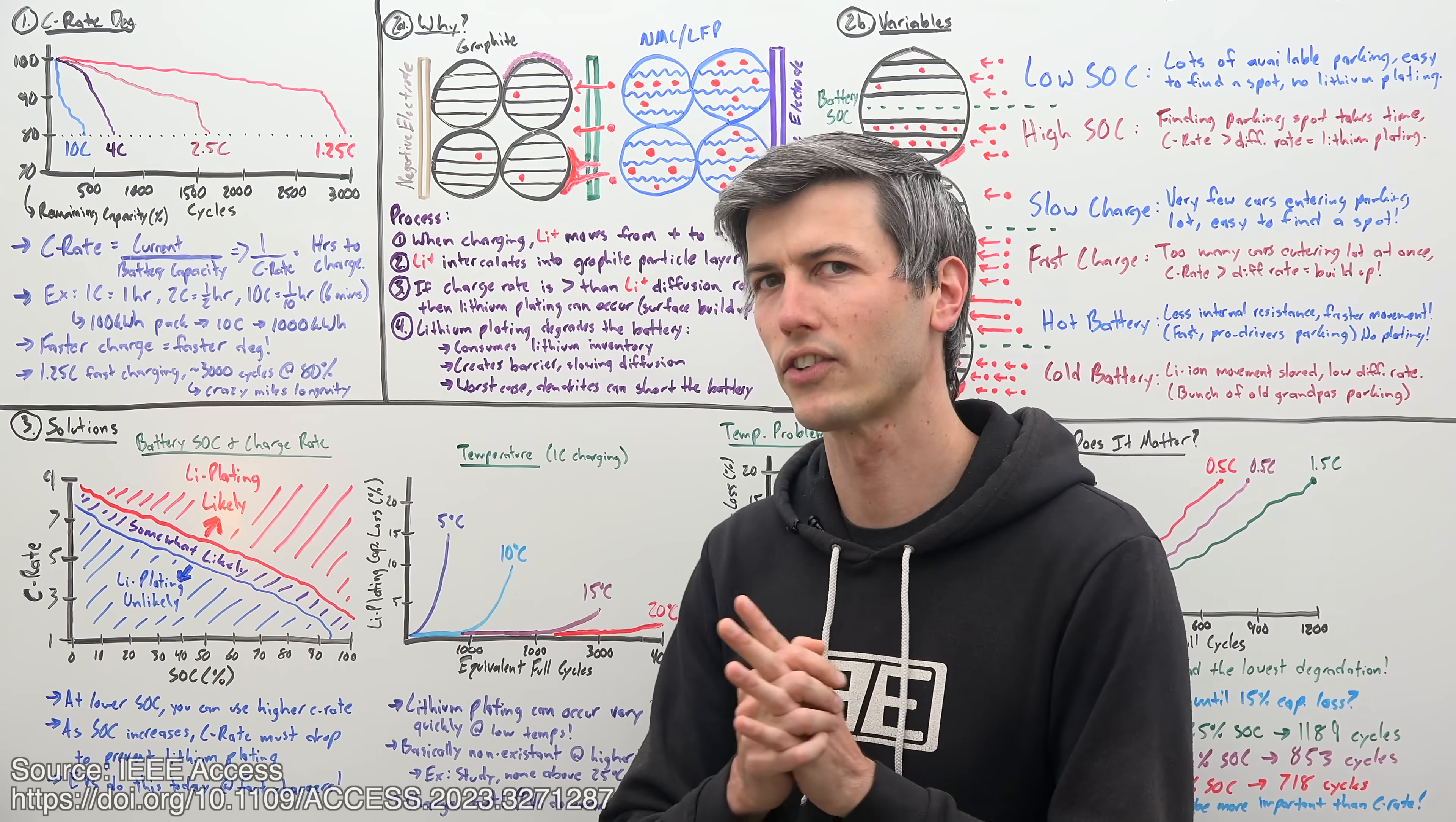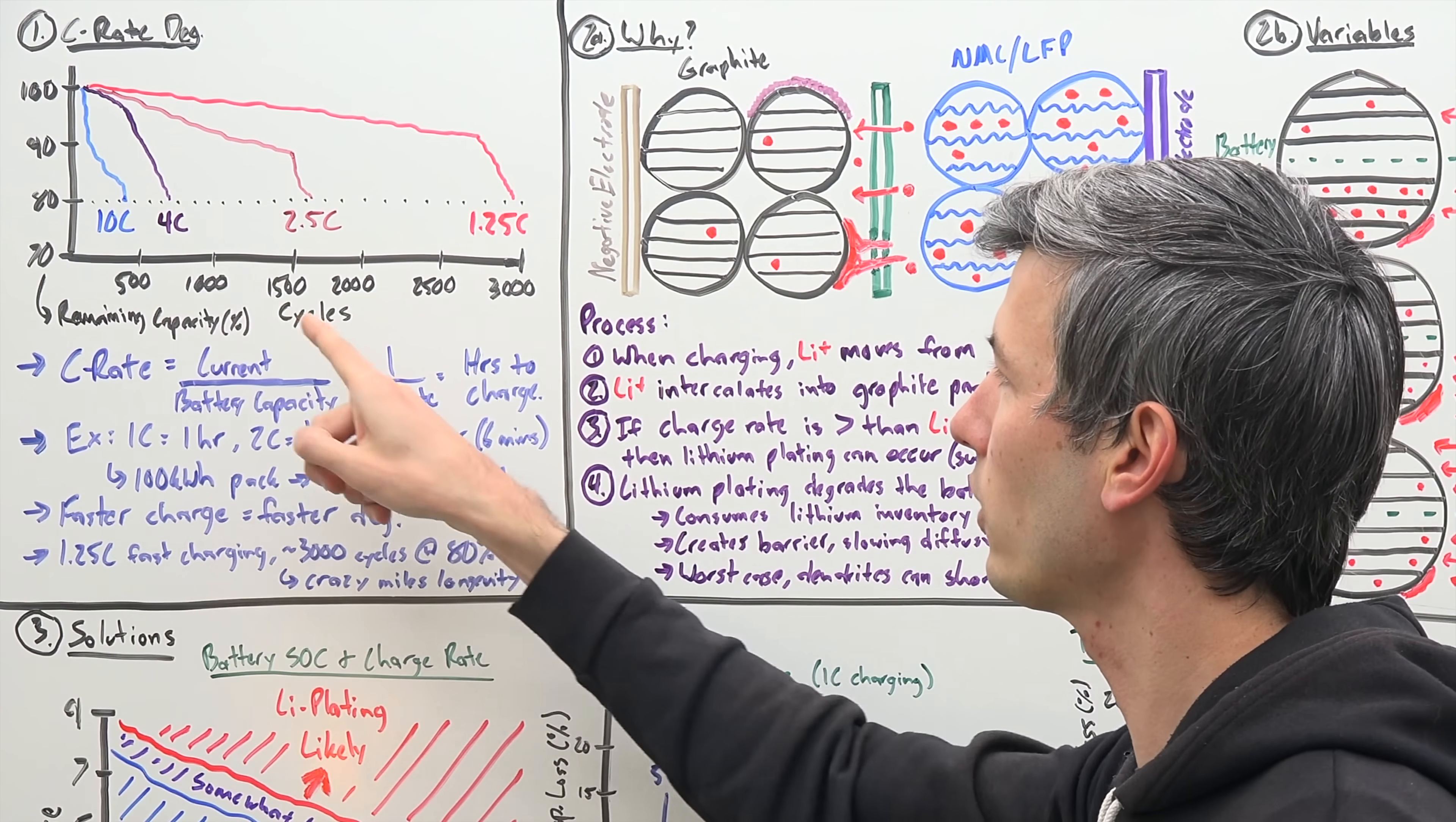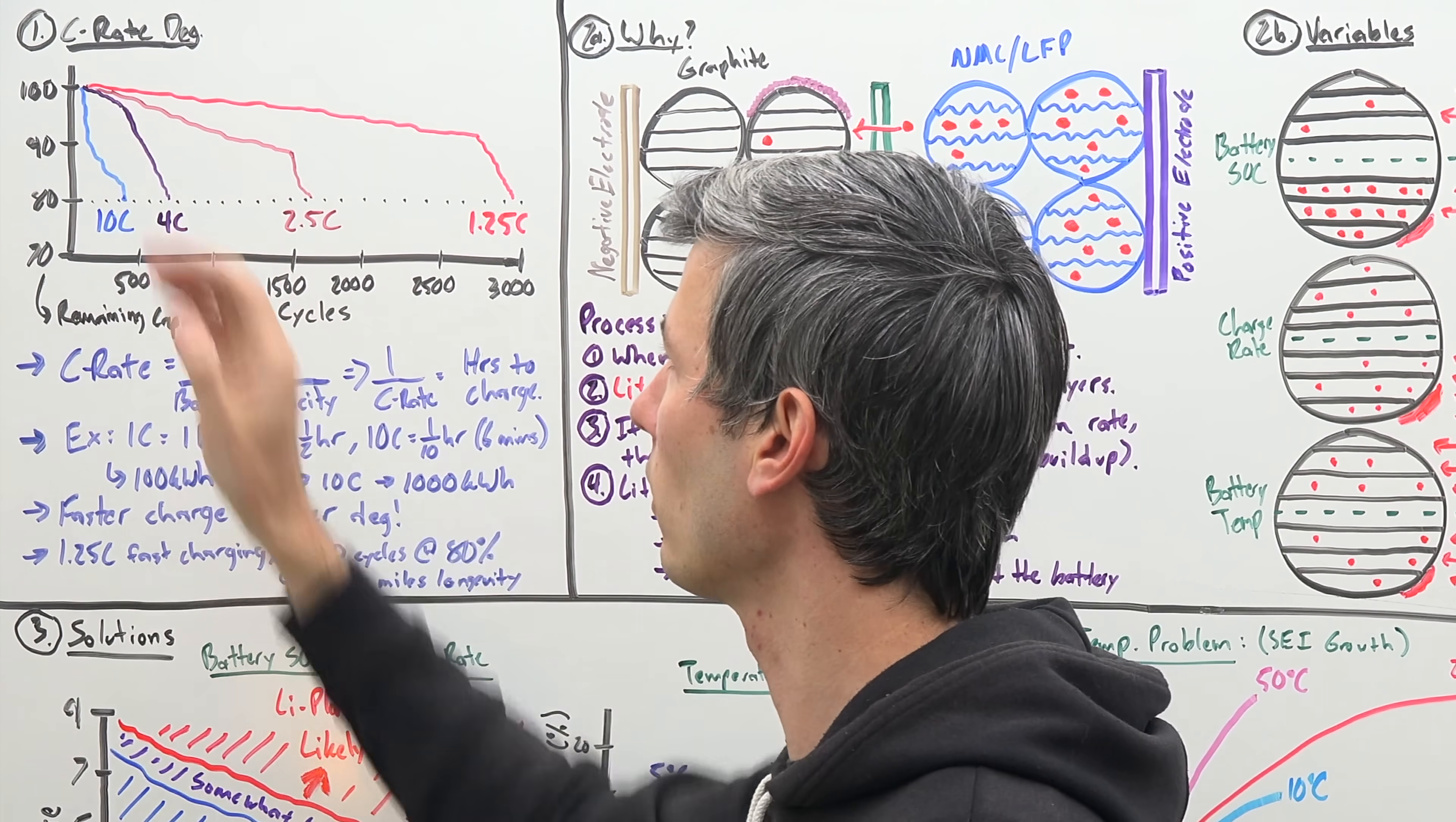So first let's look at a study that shows you the relationship between how fast you charge and how much degradation you have. So here we have different charge rates, and we're looking at how many cycles can we have of that battery before we've degraded it down to 80% remaining capacity. And so here on the right, you can see 1.25C, meaning a slower fast charge, or 10C here on the left, a very fast fast charge.